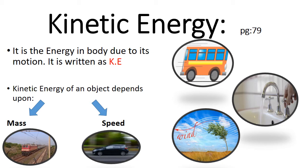Kinetic energy depends upon two things: the mass of the object and the speed of the object. If we compare a moving car and a moving train, the train will have more kinetic energy because it has more mass and moves faster than the car. The greater the mass and the speed, the greater is the kinetic energy.